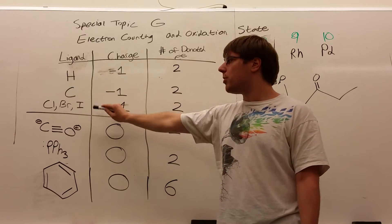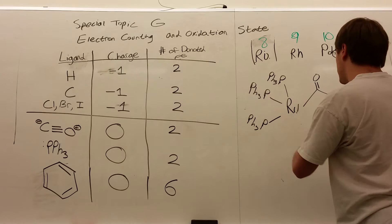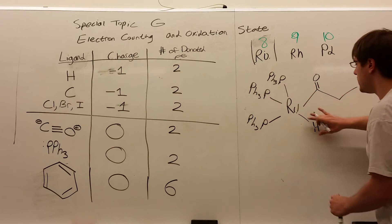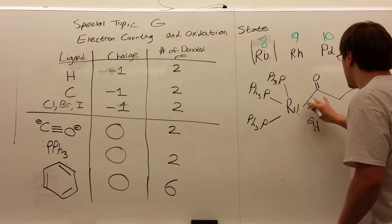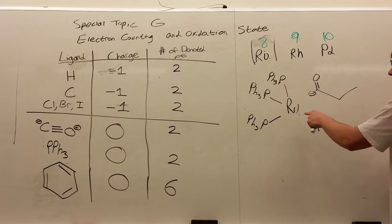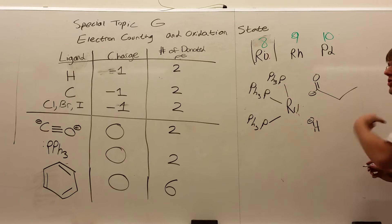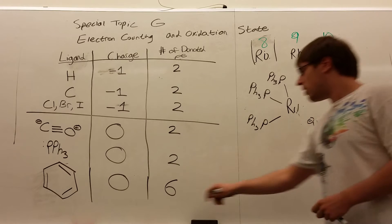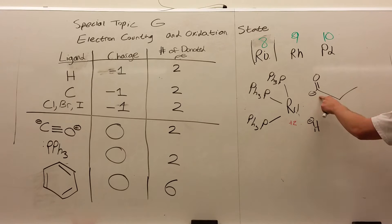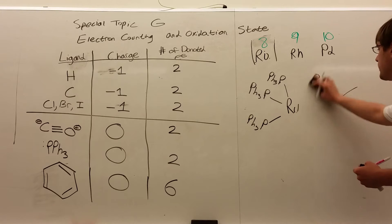Hydrogen, carbon, and halogens each come off negative when they dissociate from a metal. If this metal complex is currently neutral and the hydrogen comes off negative and the carbon comes off negative, that's a total of minus two from the ligands. Since the whole compound was neutral, the ruthenium must have had an oxidation state of plus two, because that plus two counterbalances the minus two from these two ligands.